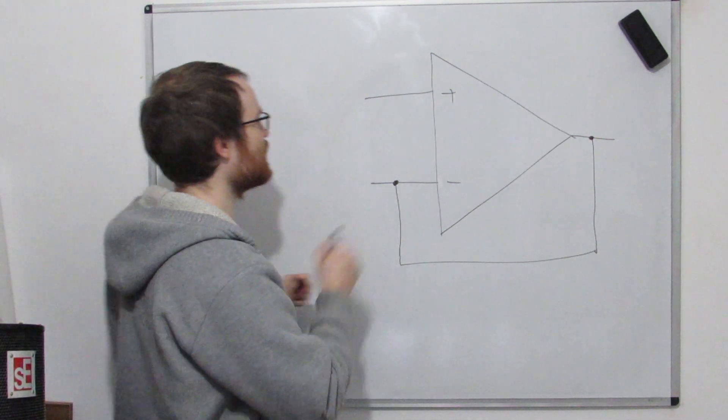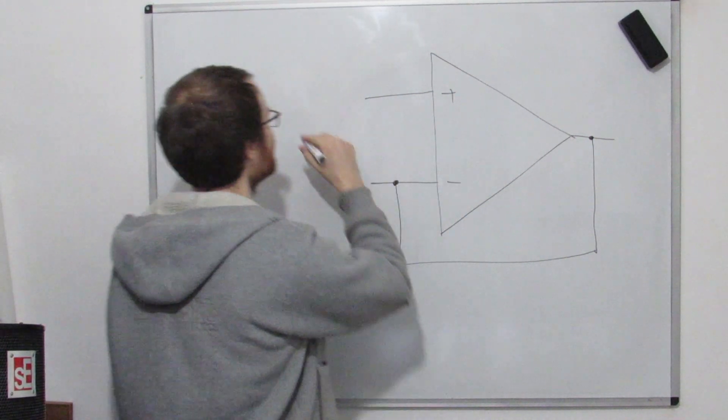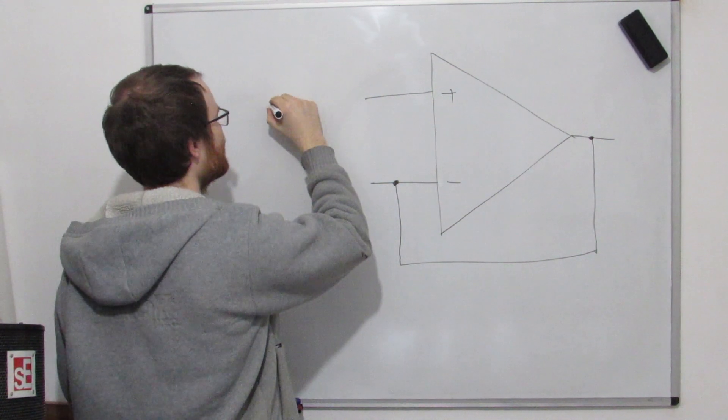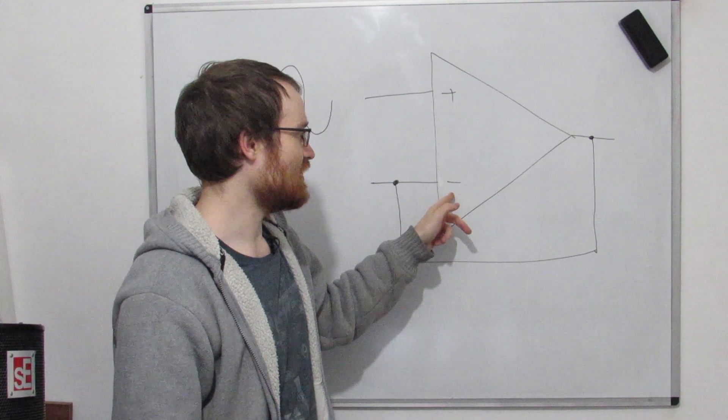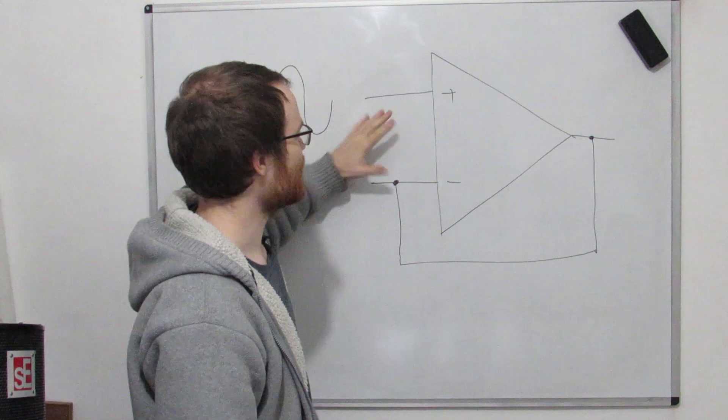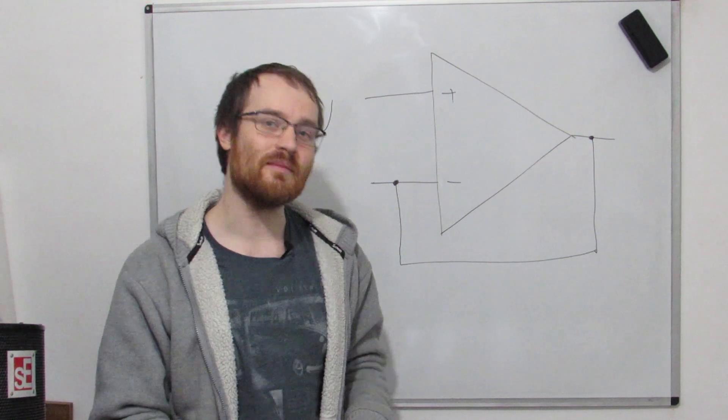Okay, so why don't I put an input in here and we'll have a look at what we're going to see in the output. If we do put a sine wave in, rule number one: do we have negative feedback? Yes, we do. Okay, so it's going to try and make these two inputs equal.